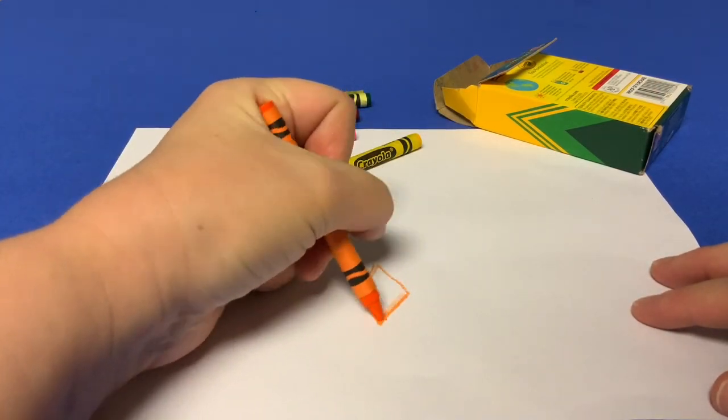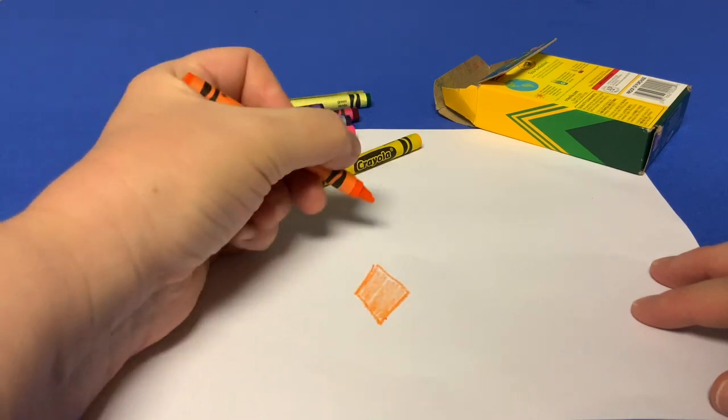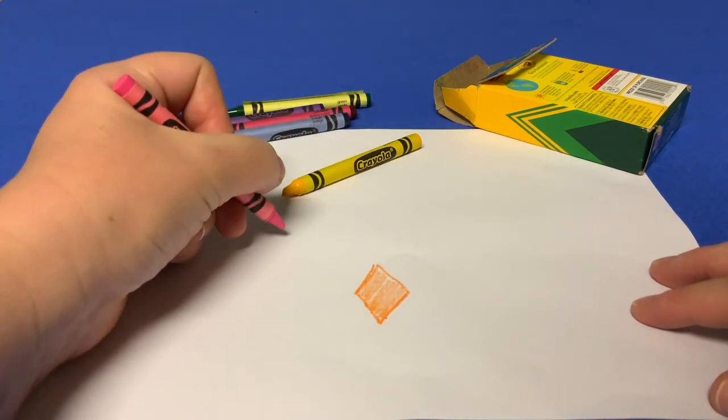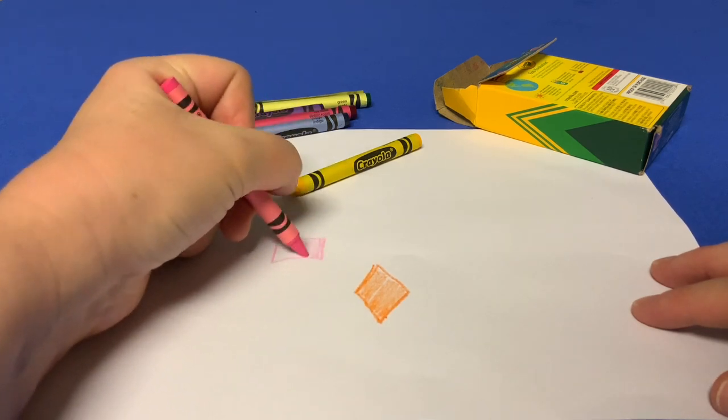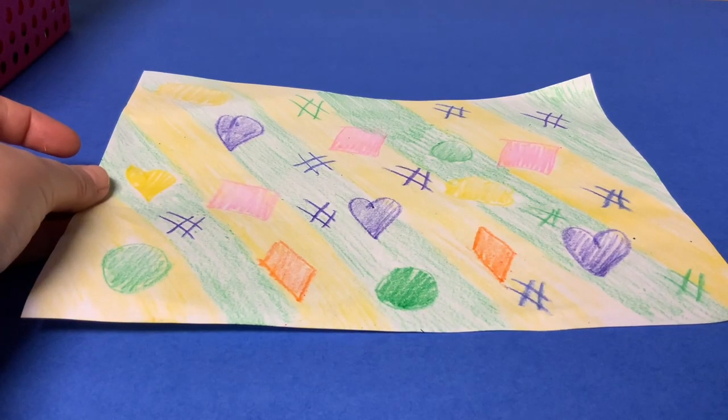I'm going to decorate the sail. I'm using crayons, but you can use markers or whatever you like. Be creative and make your own design. I colored on both sides.